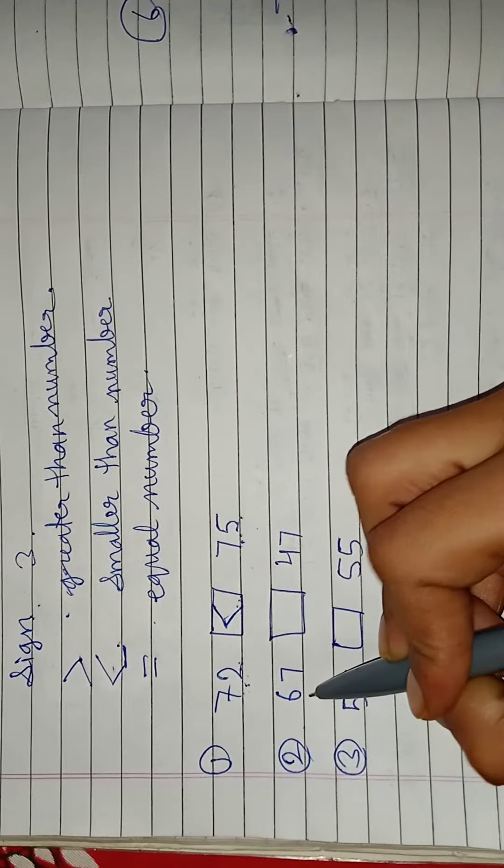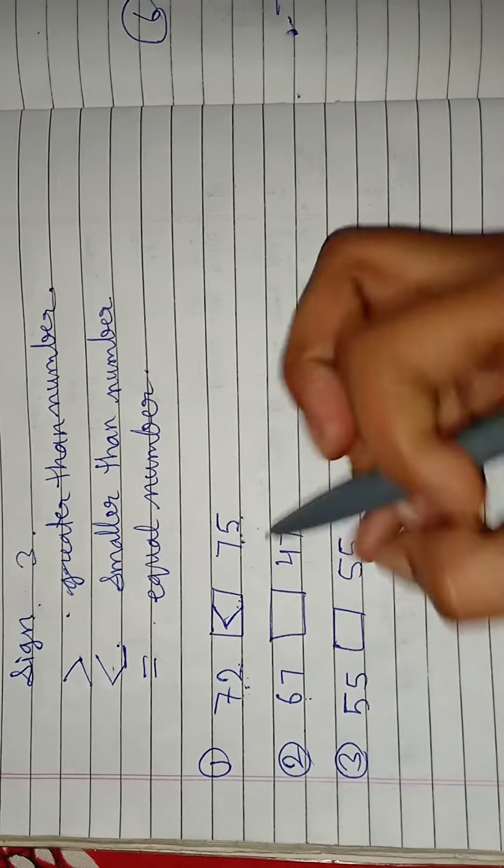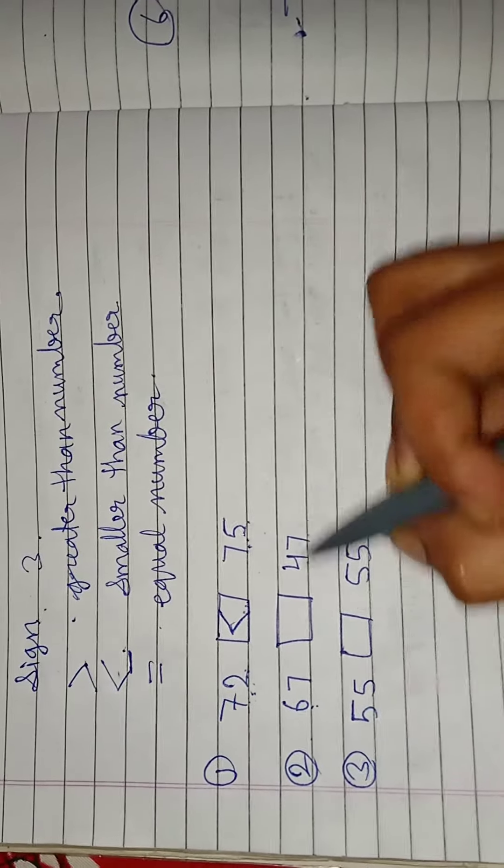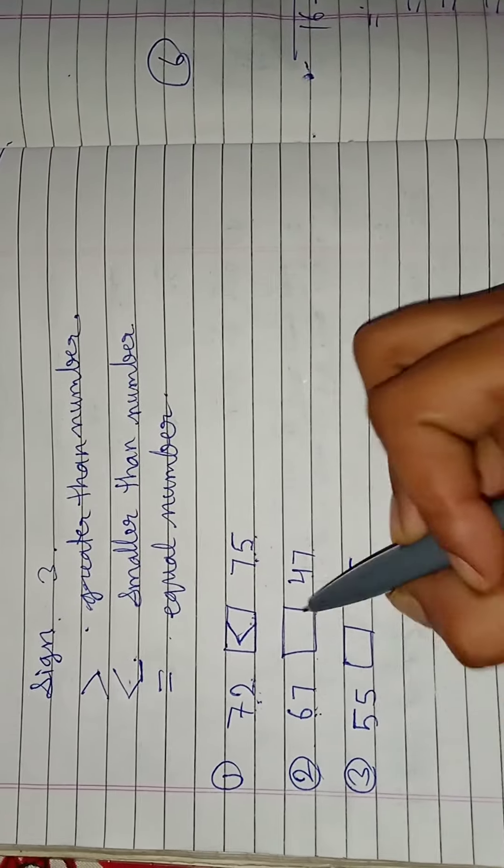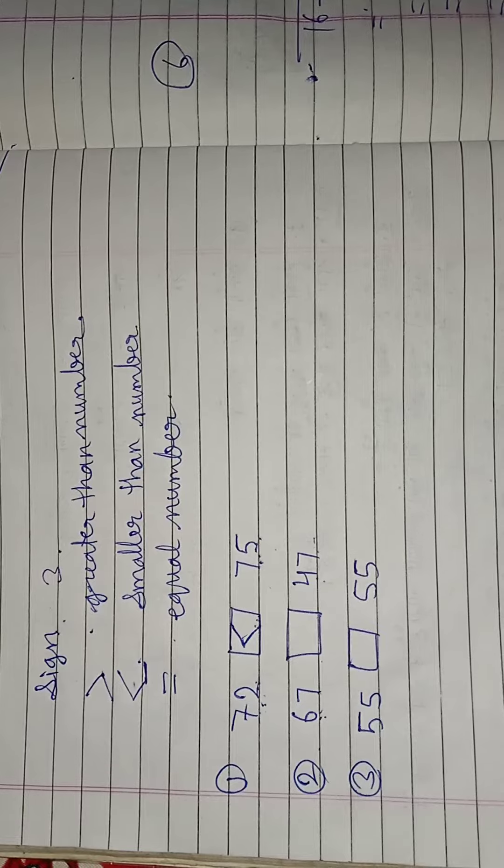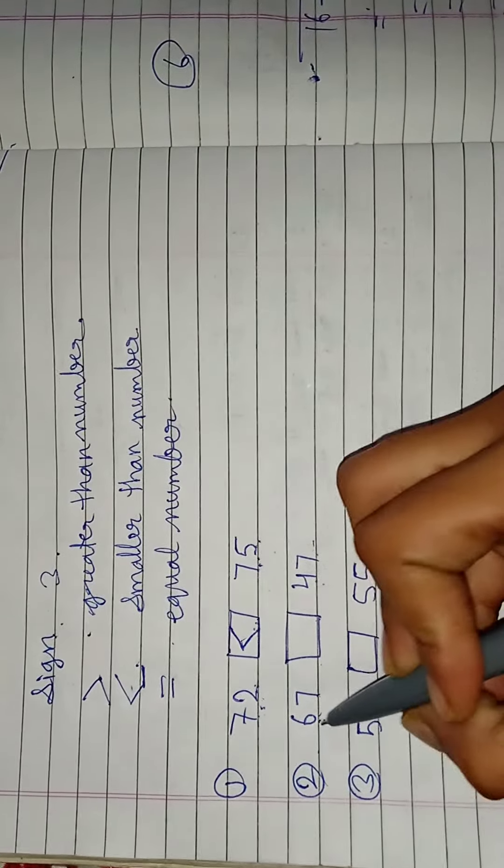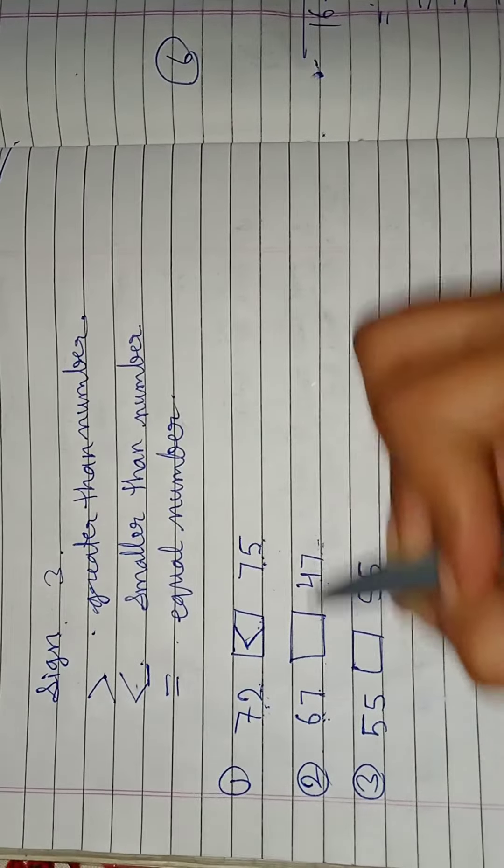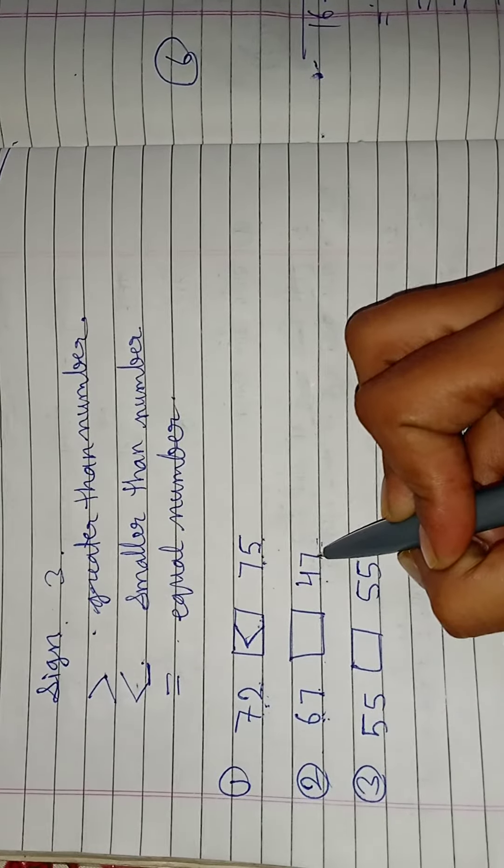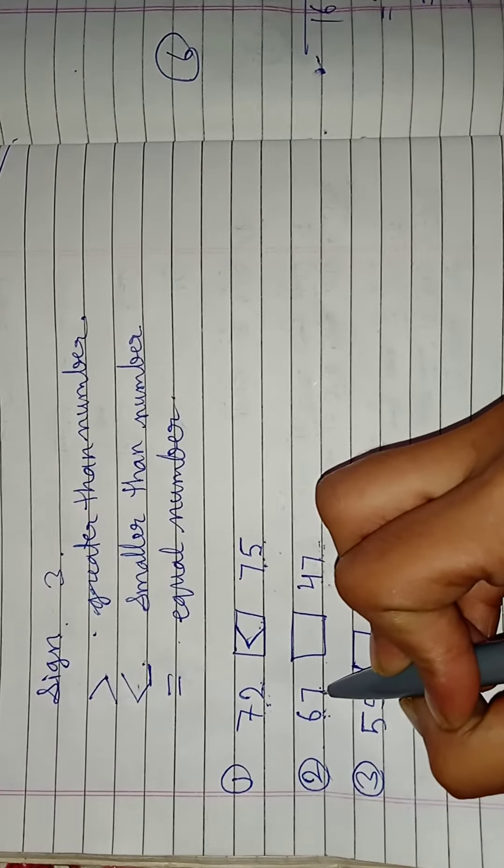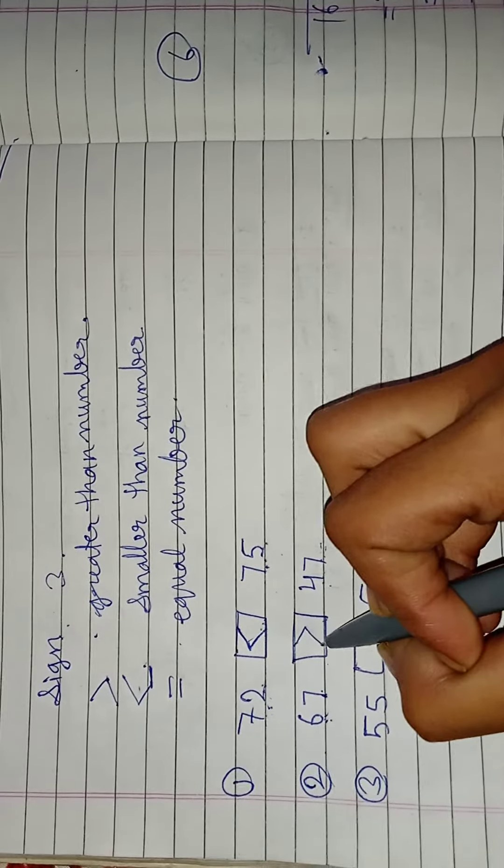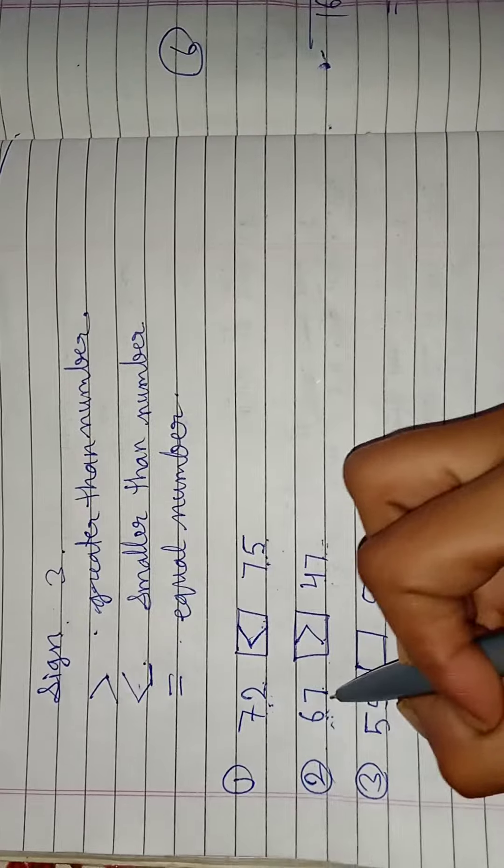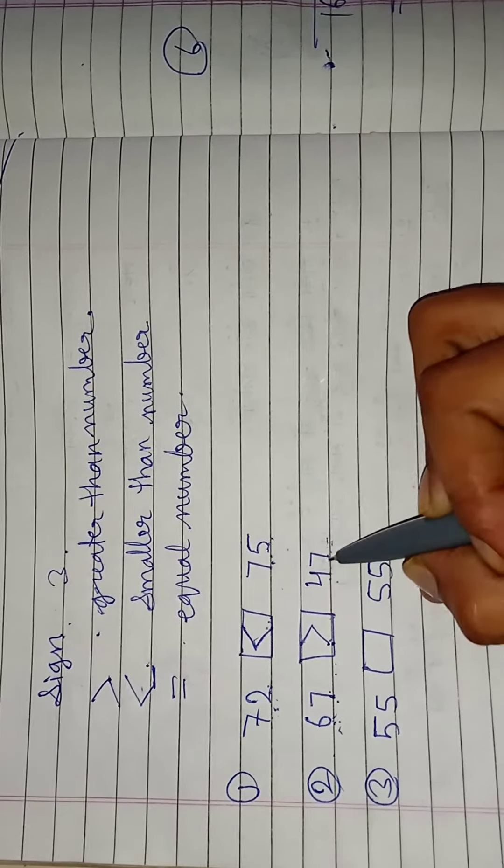Next. Second example. 67 and 47. Compare the numbers 67 and 47. Who is more than and who is less than. 67 is greatest number and 47 is smallest number. 67 is greater than 47.